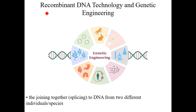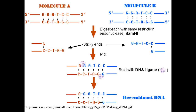The word recombinant refers to recombining or joining together — splicing is the same as joining together the DNA that's coming from two different sources. It can be two different individuals that are members of the same species, or in fact, it can be joining together the DNA that comes from two different species — not only different species, they can be from completely different kingdoms of living organisms.